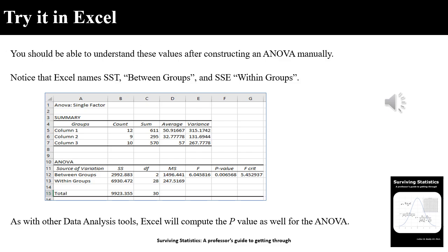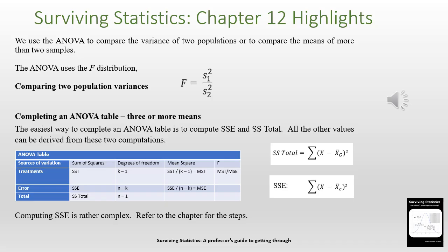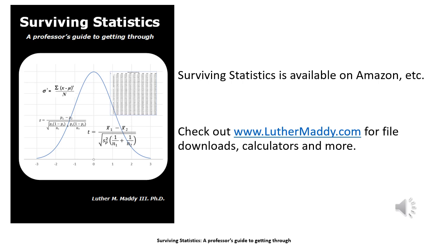The highlights for chapter 12: we use the ANOVA to compare the variance of two populations or compare the means of three or more samples. When comparing two population variances, we simply take the larger variance divided by the smaller. We learned how to construct an ANOVA table and saw the terminology involved. For the actual steps, refer to the chapter. A final word of advice: whenever possible, use Excel. Remember these lessons are based on the textbook 'Surviving Statistics,' available on Amazon, and check the website for downloadable files and other resources.